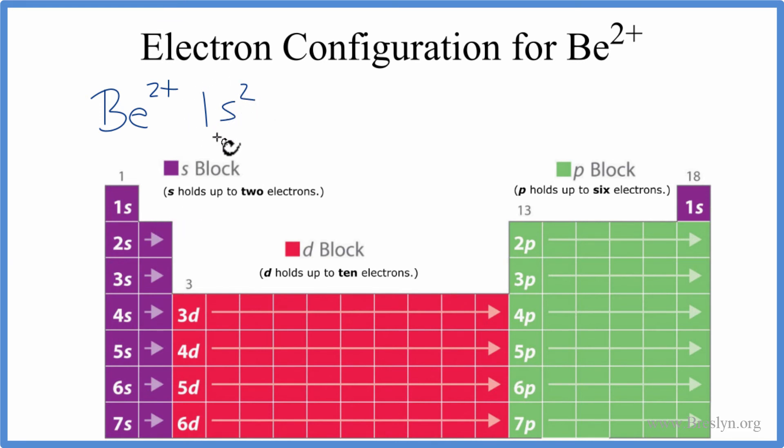And if you think about it, when beryllium forms bonds, that Be, it loses two electrons, it transfers them to another atom. And when it does that, now its outer shell is 1s2, this is its highest energy level.